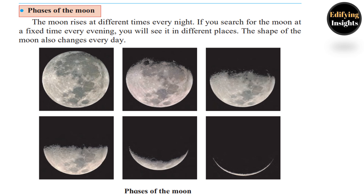Faces of the Moon: The moon rises at different times every night. If you search for the moon at a fixed time every evening, you will see it in different places. The shape of the moon also changes every day. The day the moon appears completely round is called the day of the full moon. For 15 days after that it becomes smaller and smaller; on the 15th day it cannot be seen at all — that is called the new moon day. After the new moon, the moon grows bigger and bigger for 15 days and is completely round again.